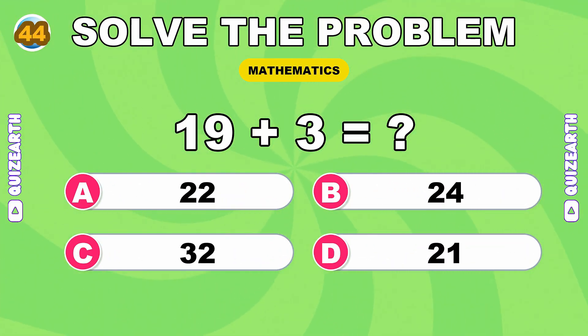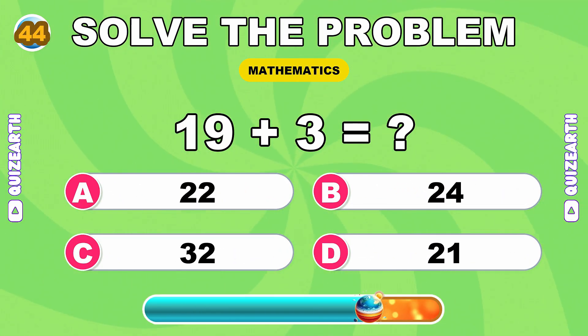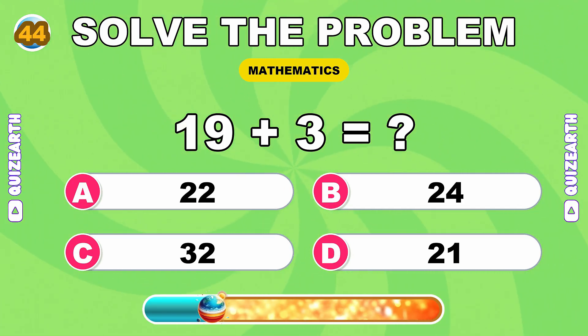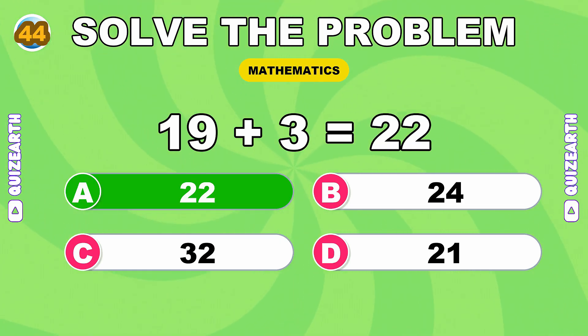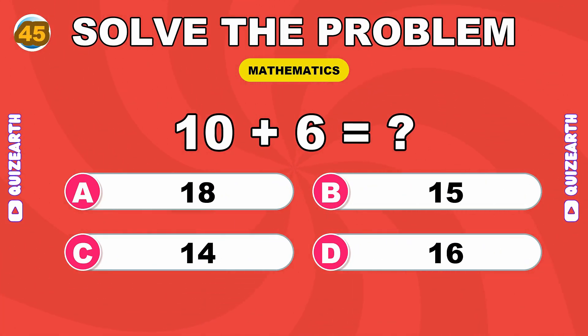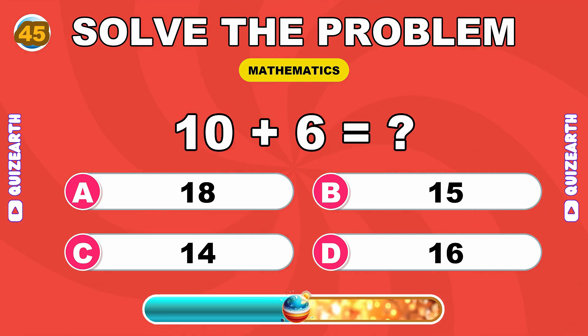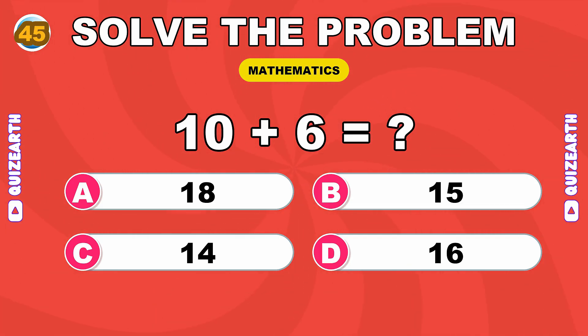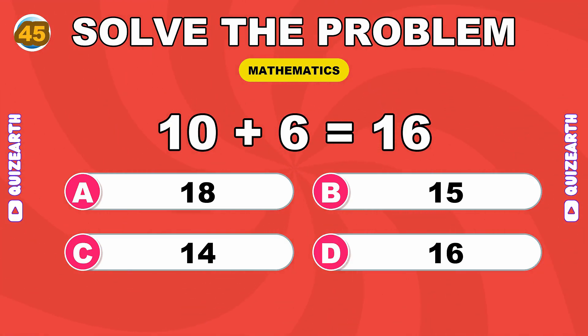How much is 19 plus 3? You're a machine, 22. What do you get when you add 10 and 6? No stopping you, 16.